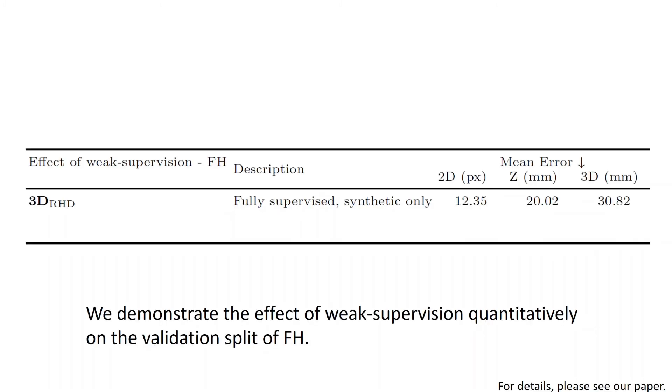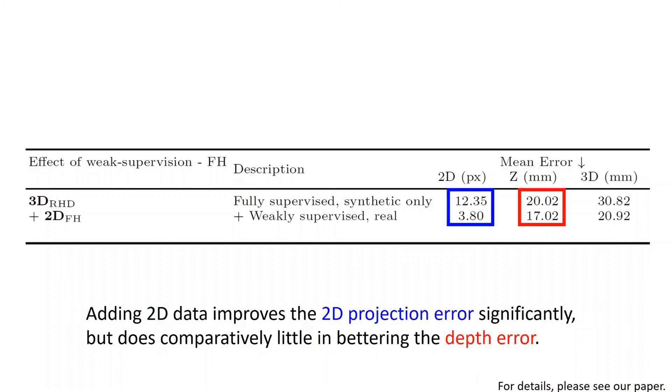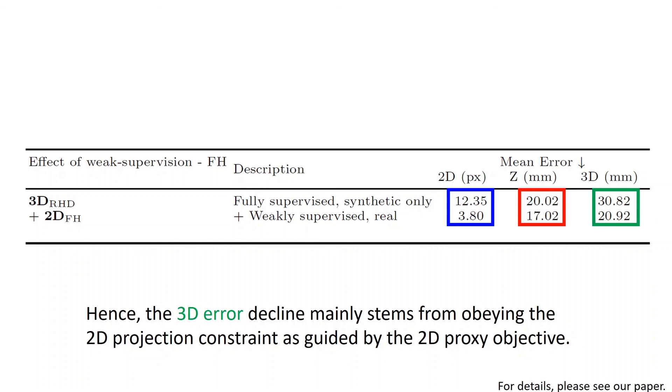We demonstrate the effect of weak supervision quantitatively on the validation split of Freihand. Adding 2D data improves the 2D projection error significantly, shown in blue, but does comparatively little in bettering the depth error, shown in red. Hence, the 3D error decline, shown in green, mainly stems from obeying the 2D projection constraint as guarded by the 2D proxy objective.